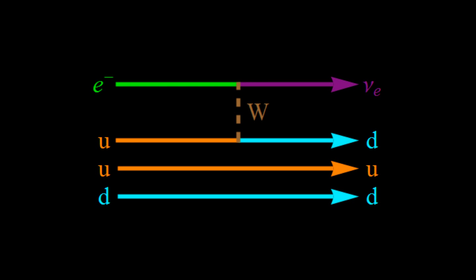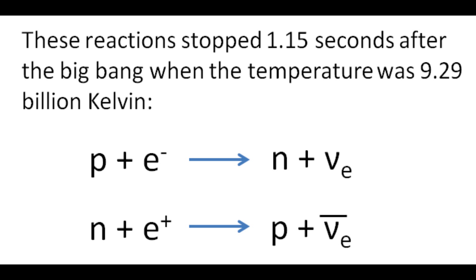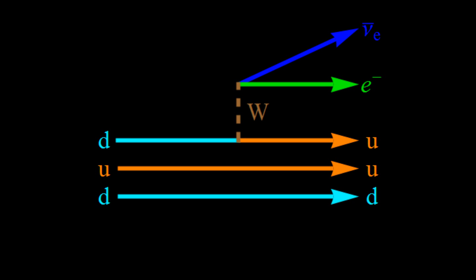After this time, neutrons and protons could still turn into each other by collisions with electrons and positrons. But the collision rate with these particles dropped below the expansion rate after 1.15 seconds after the Big Bang. After this time, the fraction of nucleons that are neutrons would have remained at 17% forever if it wasn't for the fact that neutrons could decay into protons. Because of this decay, the neutron fraction slowly decreased after this time. This event is called proton-neutron freeze-out.